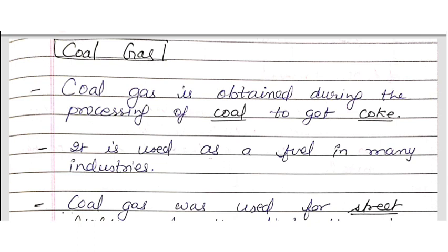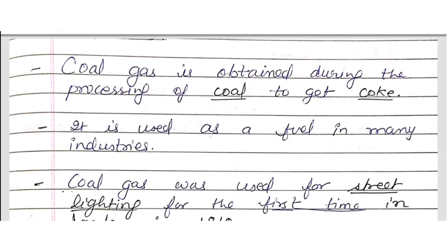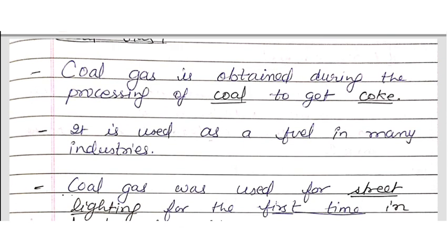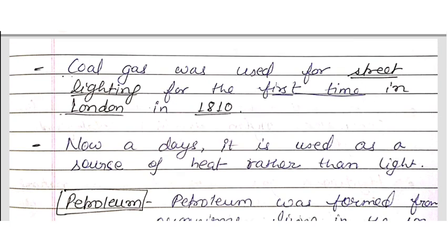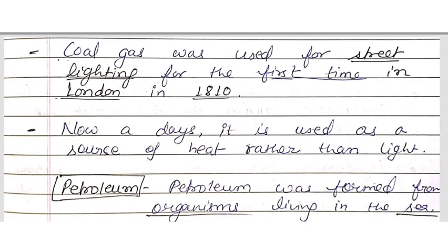Coal gas is also an important product. Coal gas is obtained during the processing of coal to get coke. It is used as a fuel in many industries. Coal gas was first used for street lighting in London in 1810. Nowadays, it is used as a source of heat rather than light.